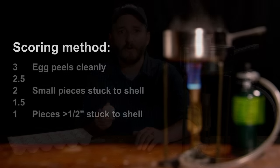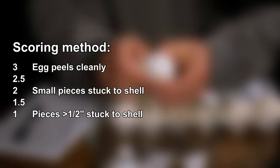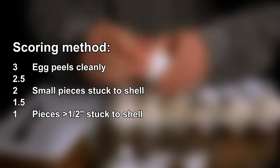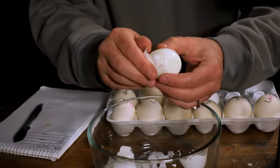I might also give a partial score of 1.5 or 2.5 if pieces break off in one place but most of the egg peels cleanly. In this way we can assign a mostly objective number value to an otherwise messy process which is essential for accurately interpreting the results.